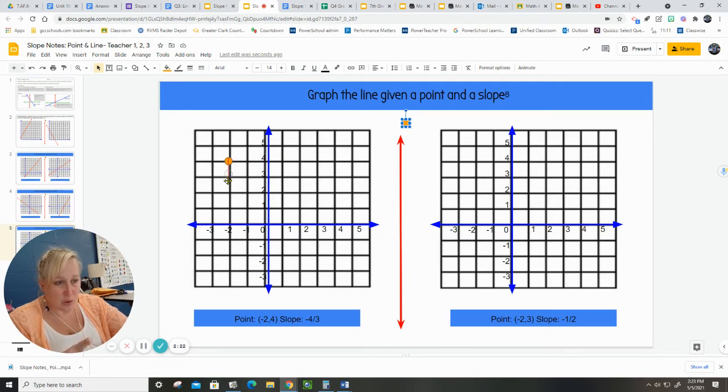Negative 4 means I go down 4, run 3. I can do it again. Let's see if I can do it again. 1, 2, 3, 4. Run 1, 2, 3. Perfect.